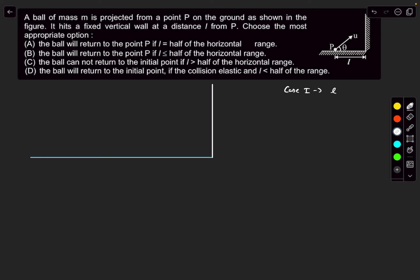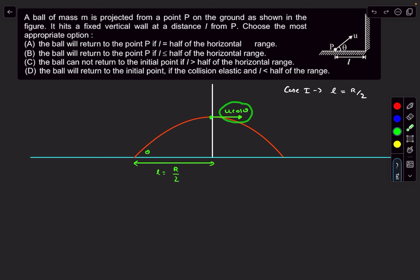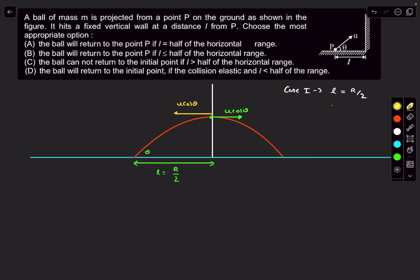Consider the case when l equals R/2. If there were no wall, the trajectory would have the wall intersecting at the point of maximum height. At the topmost point, the velocity vector is horizontal with magnitude u cos θ. If the collision is elastic, the impulse is perpendicular to the wall, so u cos θ gets reversed. The ball follows the same trajectory back and hits the initial point.